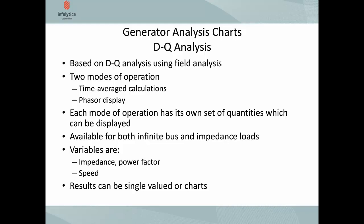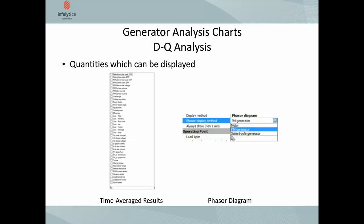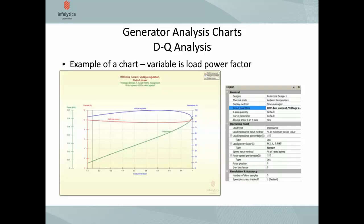Here's an example of DQ analysis output. On the left side are the different time-average quantities you can display, and on the right side the different phaser types, including a motor phaser diagram which differs slightly from a generator phaser diagram. In the experiment shown, I've chosen to view RMS line current, voltage, and vary the load power factor from 0.1 to 1 in 0.025 increments, displaying all selected quantities on the same chart.